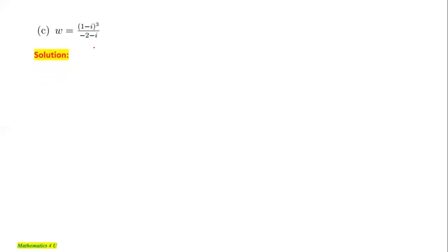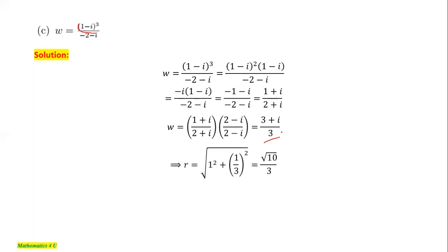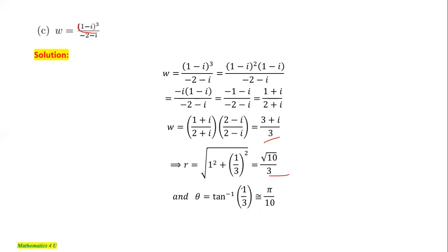For part c, after simplification from a previous question, the expression reduces to (3 + i)/3. The magnitude is √10/3, and the principal argument is tan⁻¹(1/3) ≈ π/10. Therefore the polar form is z = (√10/3)(cos(π/10) + i·sin(π/10)).